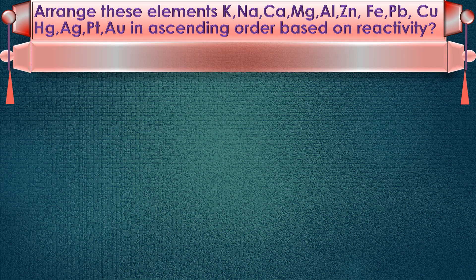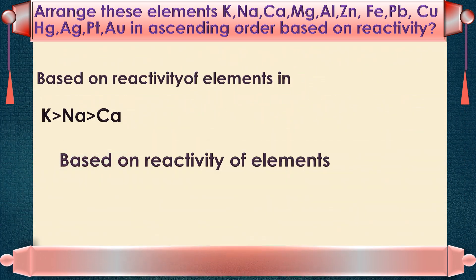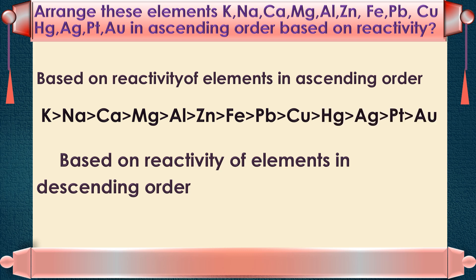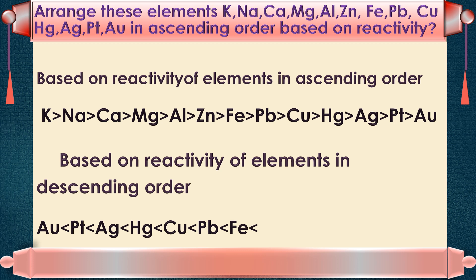Arrange these elements — Potassium, Sodium, Calcium, Magnesium, Aluminium, Zinc, Iron, Lead, Copper, Hg, Ag, Platinum, Au — in ascending order based on reactivity. In ascending order, the most reactive element is Potassium, followed by Sodium, Calcium, Magnesium, Aluminium, Zinc, Iron, Lead, Copper, Hg, Silver, Platinum, and the least reactive metal is Au (Gold). In descending order, simply reverse this sequence.